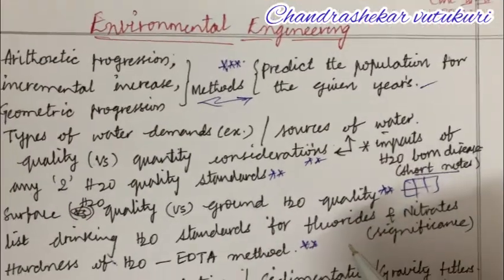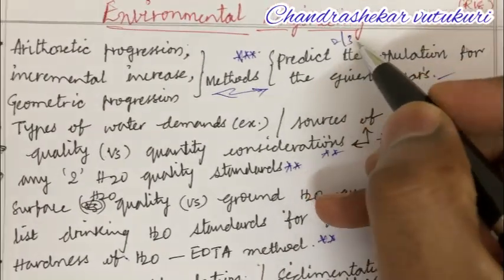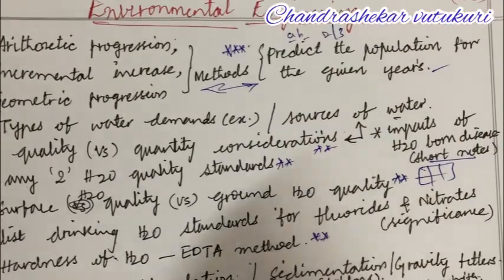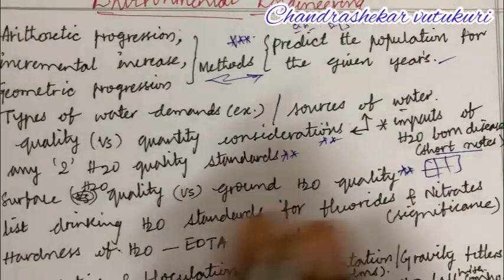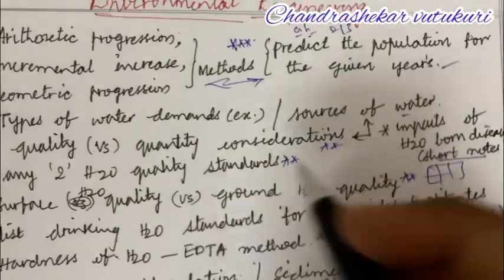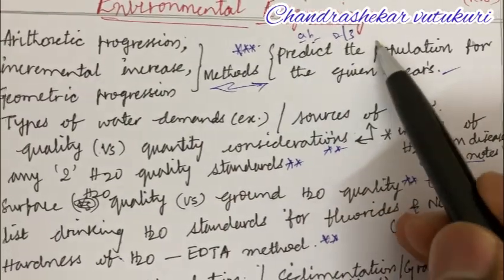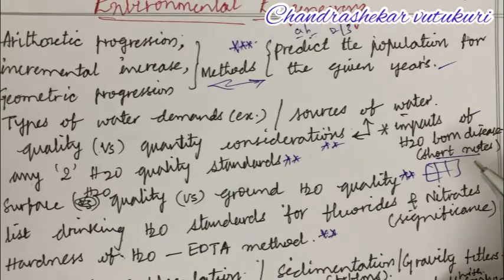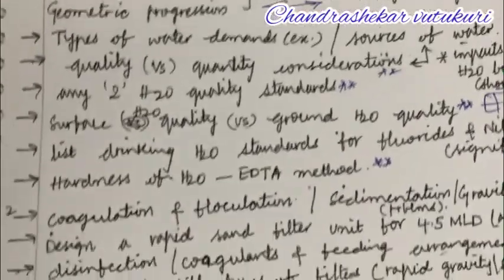These are the questions for the second and third question as well as A and B parts. You are supposed to be thorough with all the concepts related to Unit 1 so that you are able to write A, B and question 2 or 3. Do not expect direct marks — it is a combination of five and five, students.